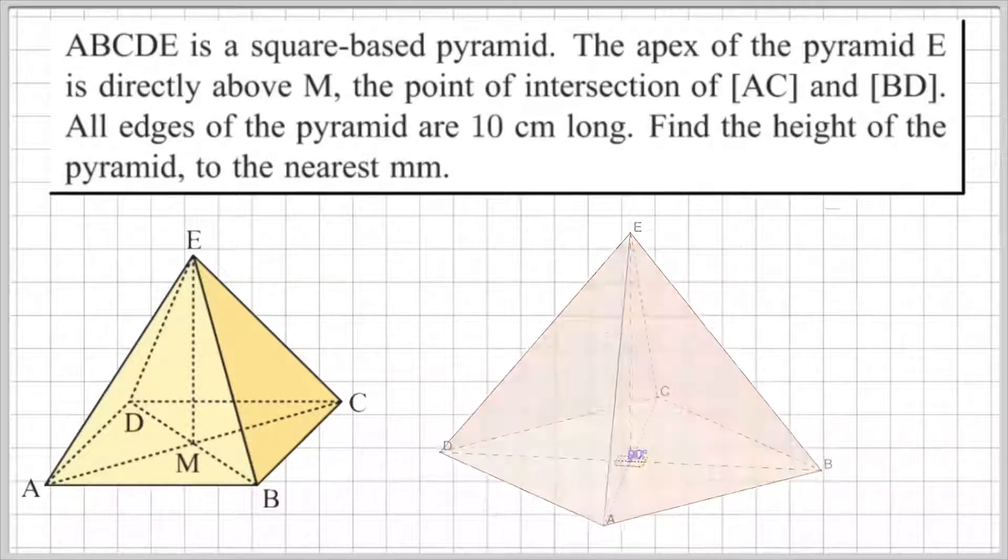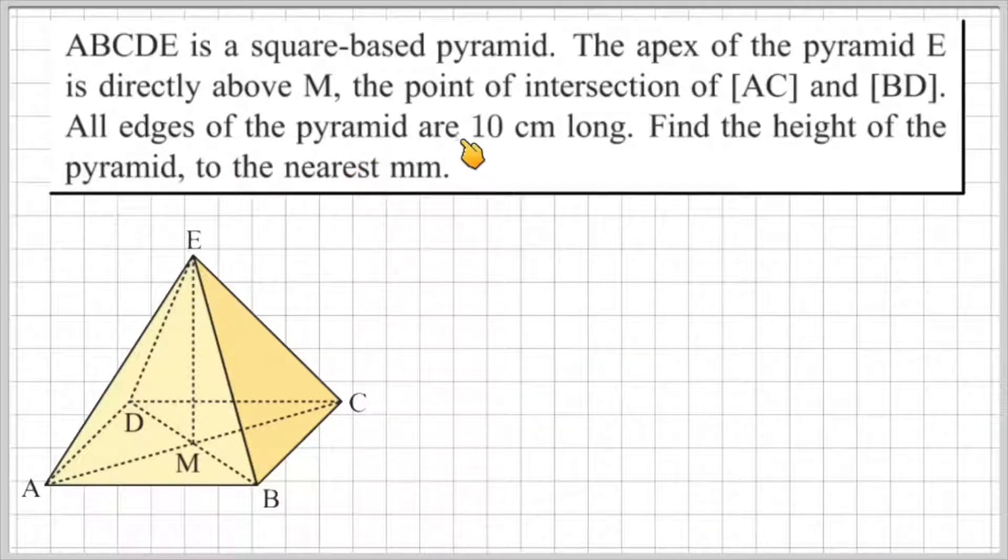Moving on, it says all edges of the pyramid are 10 centimeters long. That includes the base and the edges running from the base to the apex. They're all 10 centimeters long. Find the height of the pyramid to the nearest millimeter. This means we are going to end up doing some rounding.